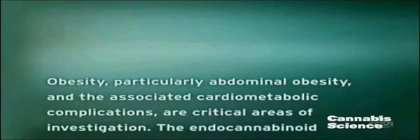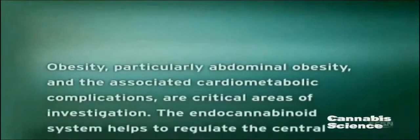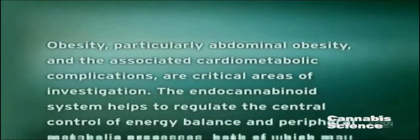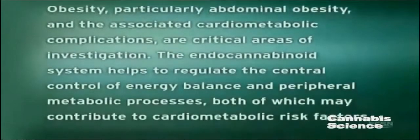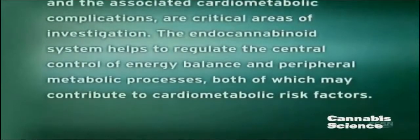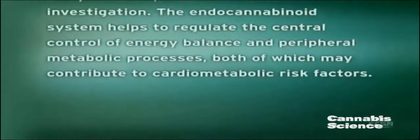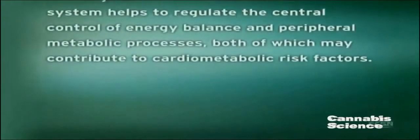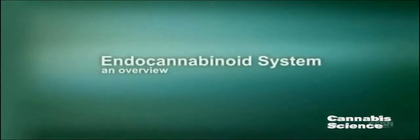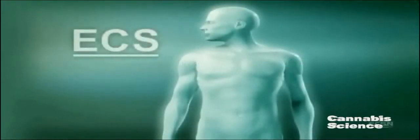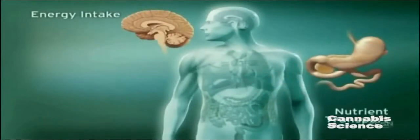Obesity, particularly abdominal obesity and the associated cardiometabolic complications, are critical areas of investigation. The endocannabinoid system helps to regulate the central control of energy balance and peripheral metabolic processes, both of which may contribute to cardiometabolic risk factors. The endocannabinoid system, or ECS, influences multiple physiologic processes. This intricate system modulates energy intake as well as nutrient transport, metabolism, and storage.